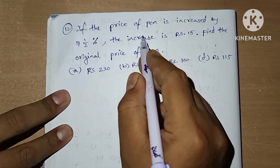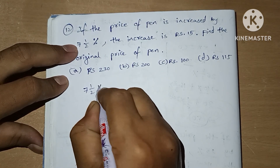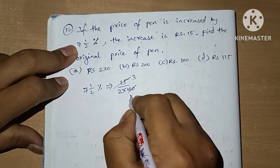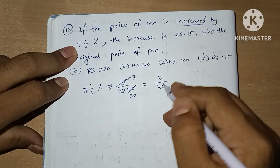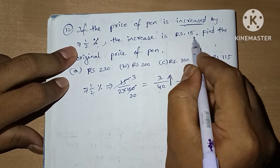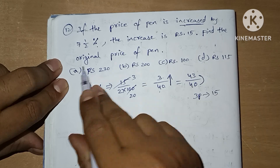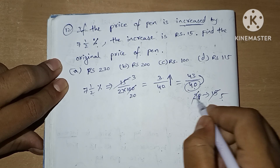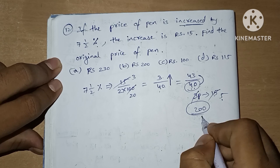Question 12: If the price of a pen is increased by a certain percentage, first we find the fraction. The percentage gives fraction 3/40. Since it is increased, we add: 40 plus 3 gives 43/40. The increase is 15 rupees, so 3 parts equals 15, meaning 1 part is 5. For the original price we need 40 parts: 40 times 5 equals 200. So the answer is option B, 200.